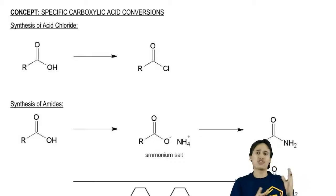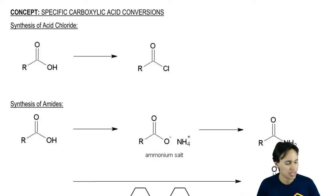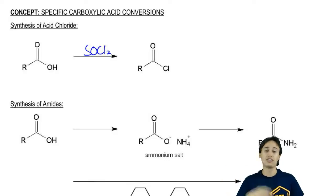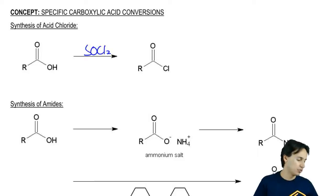You guys should have probably seen this reaction already at some point in organic chemistry, but the most common reagent to do this is SOCl2. That's a very common reagent to add chlorine to all kinds of things, to alcohols and to carboxylic acids. But there are other reagents we can use.